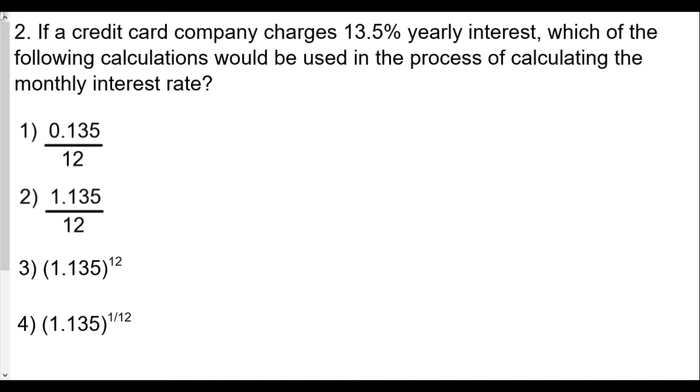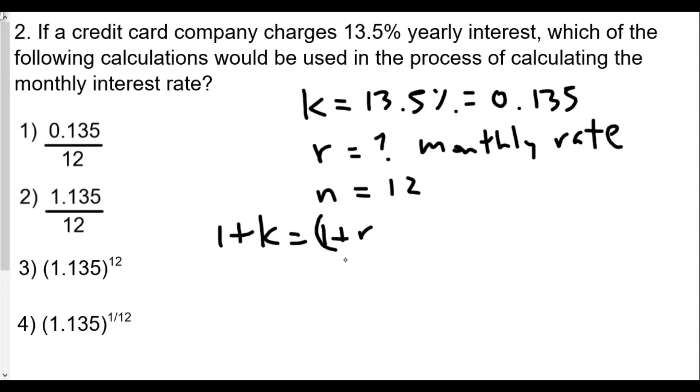Well, in this case, the yearly interest rate k would equal 13.5%, or 0.135. Here the monthly rate r we don't know. And in this case, the number of months in a year would be 12. So we set up our equation. 1 plus k is equal to 1 plus r raised to n. So we have 1 plus 0.135 is equal to 1 plus r raised to the 12th power.